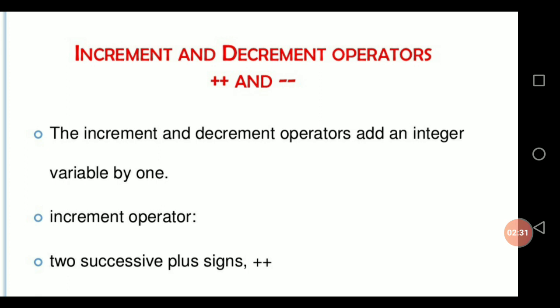The next operator is called increment and decrement operator. Here, we are using two special symbols: plus-plus and minus-minus. Plus-plus is called the increment operator, and minus-minus is called the decrement operator. Plus-plus and minus-minus are unary operators because these operators only require a single operand. Plus-plus is useful to add 1 into the variable — this is called increment operation. Minus-minus is useful to subtract 1 from the variable — this is called decrement operation. Depending upon the place of the operator, we classify two types: one is called prefix and another is called postfix. Before the operand we use the operator — it is called prefix. After the operand we use the operator — it is called postfix.